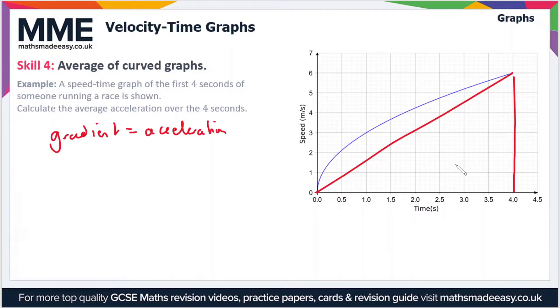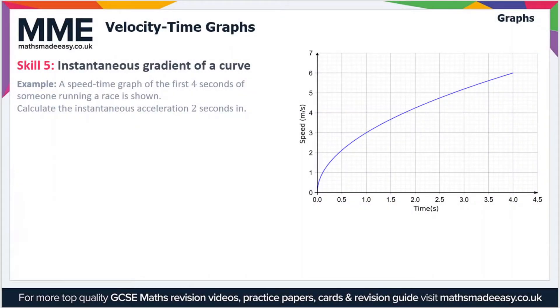The gradient is the height divided by the width. The height is 6 meters per second, so we can say that acceleration is 6 meters per second divided by the time span of 4 seconds. Six divided by 4 is three over two, or 1.5, and then it's meters per second squared, or meters per second to the minus two, depending on how you want to write your units.